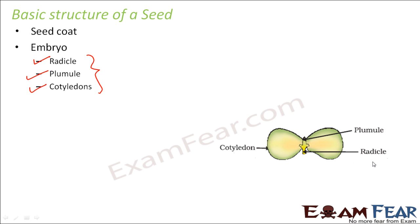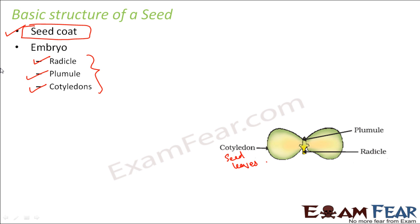The radicle is the tiny root which grows to form the root system of the plant. The plumule is the small shoot which grows to form the shoot system. Cotyledons are the seed leaves used for storage of food, providing nutrition for the growth of the plumule and radicle into new shoot and root systems respectively. To protect all of these, there is an outer covering called the seed coat.